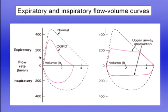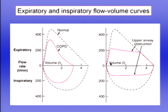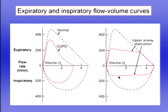Another test is the inspiratory flow-volume curve. There is no dynamic compression during inspiration — in fact, airways are held open. However, we sometimes examine inspiratory flow-volume curves to detect upper airway obstruction, classically from tracheal compression by lymph glands or a neoplasm outside the trachea. In this example, the inspiratory flow-volume curve is flattened, which is a very useful diagnostic sign for picking up tracheal obstruction.